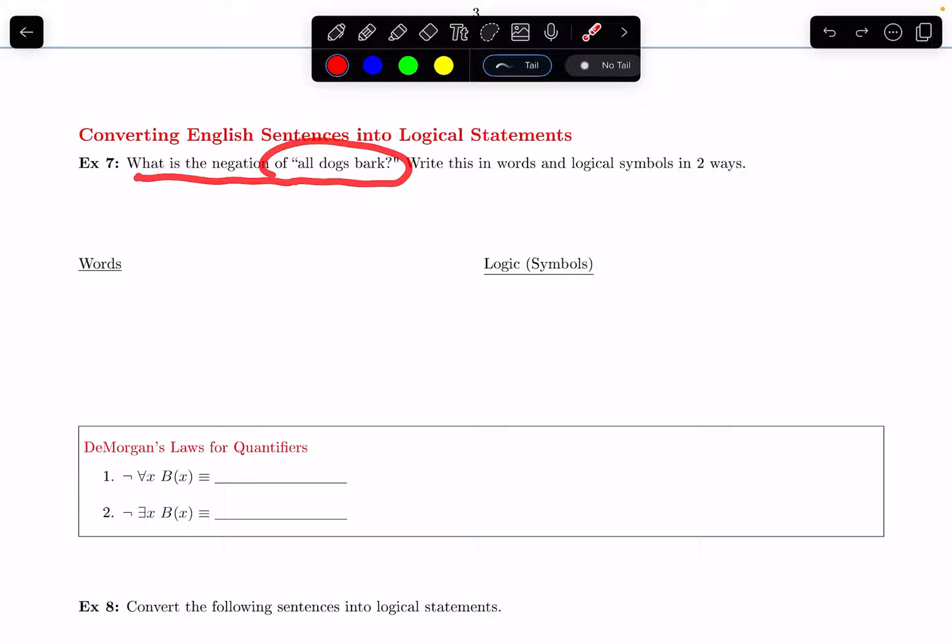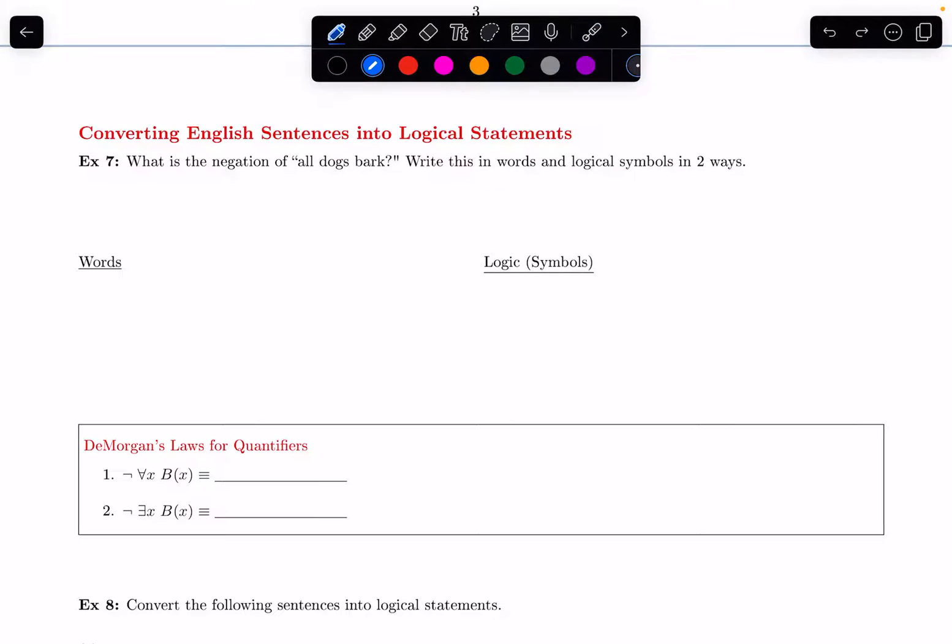What is the negation of all dogs bark? I want to write this in words and logical symbols in two ways. When I see the word all, it makes me think of my for all quantifier. So there's a for all X situation going on here. Maybe X represents dogs. And then there's this word bark, which is signifying some action. So I'm probably going to need some propositional function to represent barking. Maybe I'll call that B of X.